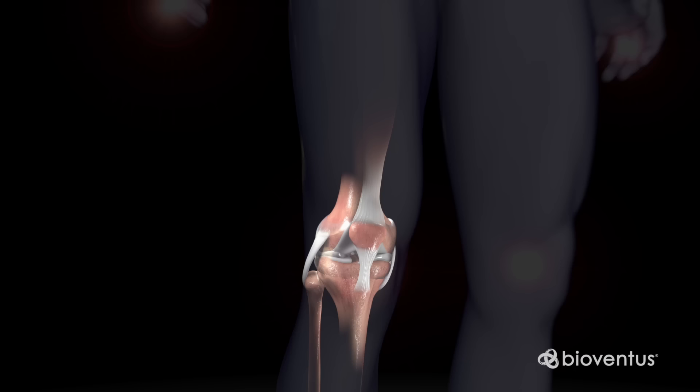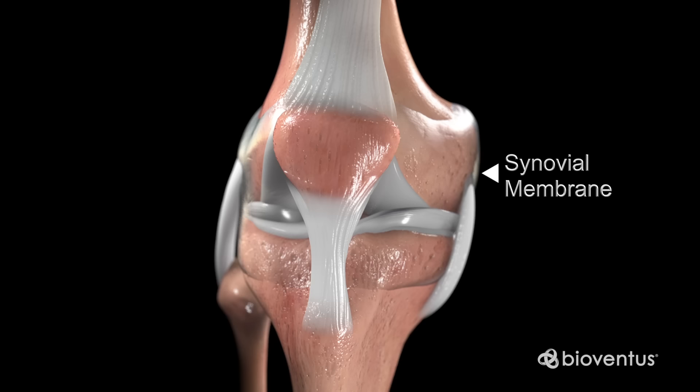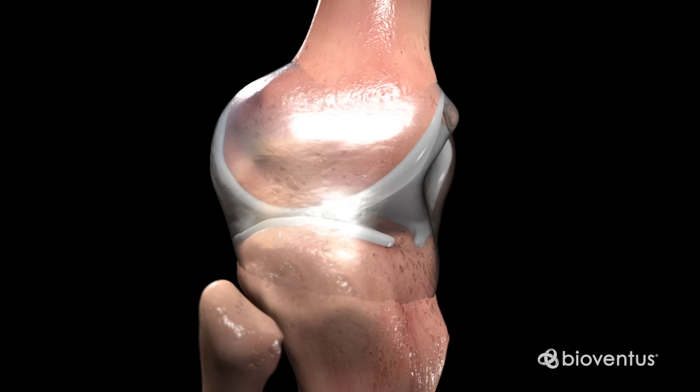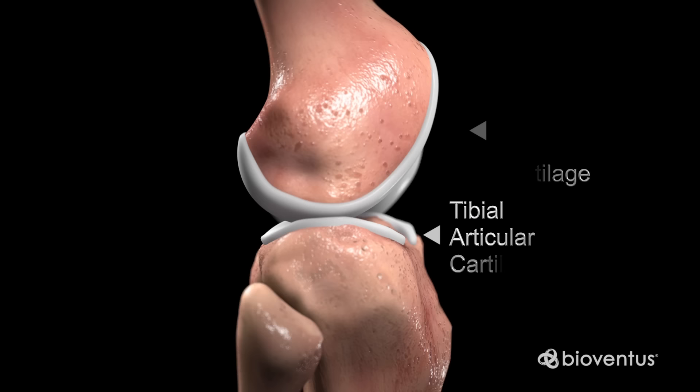The knee joint is made up of the femur, tibia, patella, along with the synovial membrane, which contains synovial fluid. Synovial fluid acts as a lubricant in the knee joint. The end of the femur is covered in articular cartilage, which moves against the articular cartilage of the tibia.